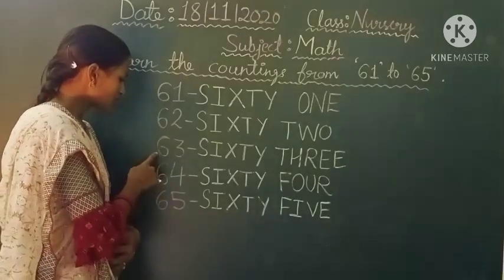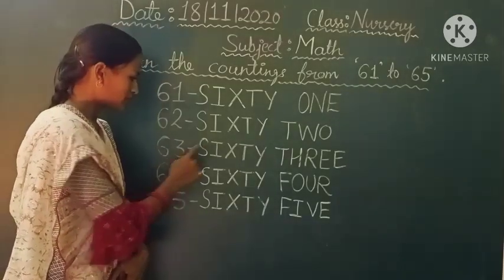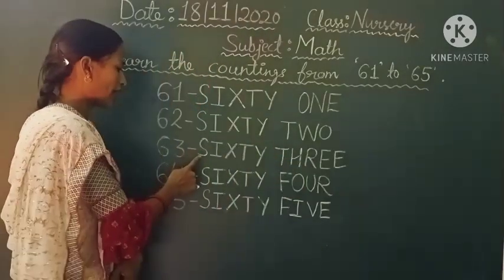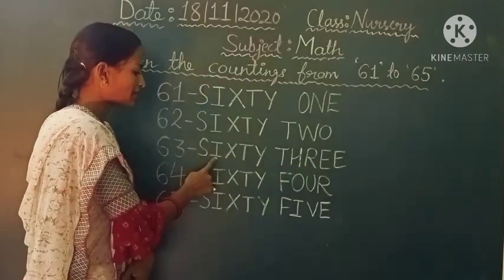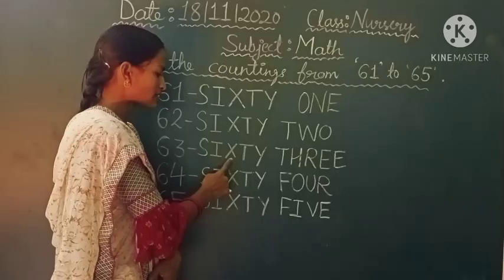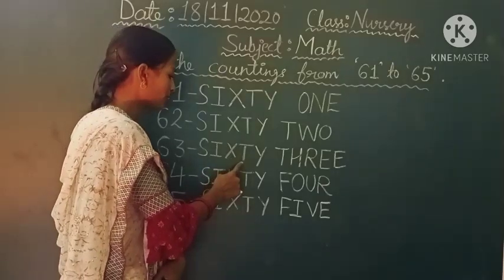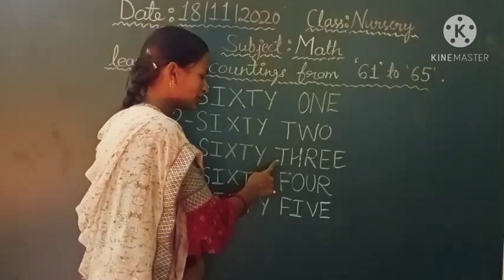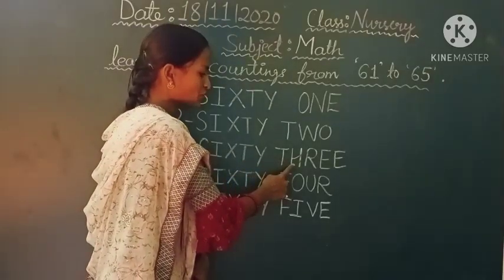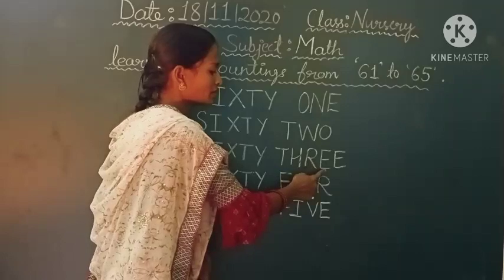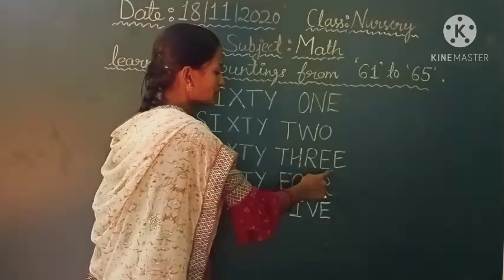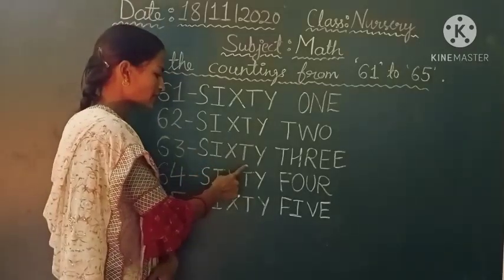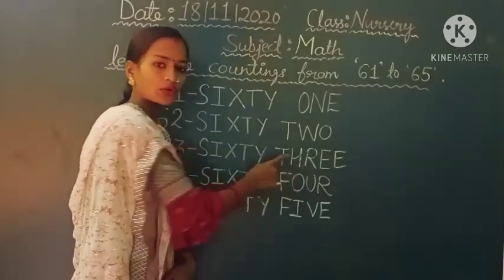Next is 63. 63. S-I-X-T-Y. 60. T-H-R-E-E. 3. 63. 63. Okay students.